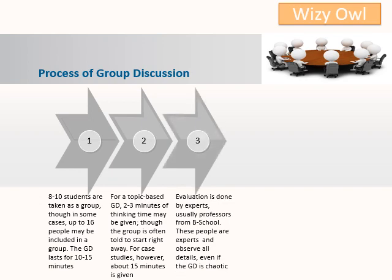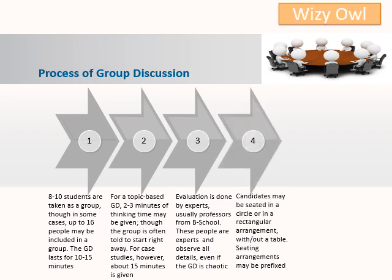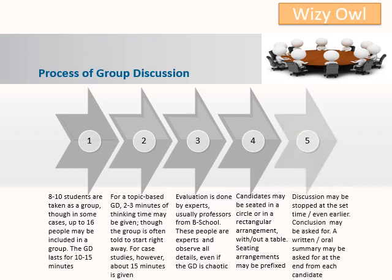Evaluation is done by experts, usually professors from B-schools. These people are experts and observe all details even if the GD is chaotic. Candidates may be seated in a circle or in a rectangular arrangement with or without a table. Sitting arrangements may be prefixed. Discussions may be stopped at the set time, even earlier. Conclusion may be asked for, and a written or oral summary may be asked for at the end from each candidate.